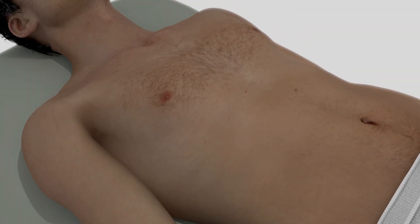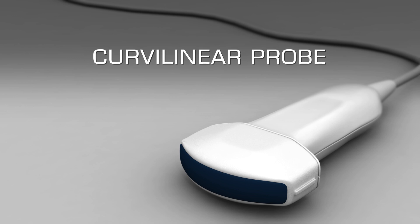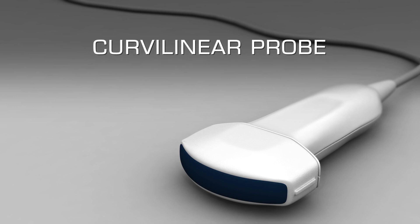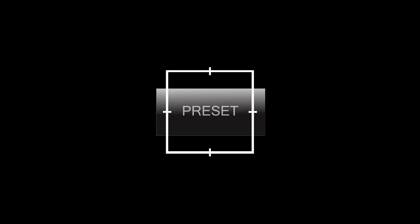As a starting point for the examination, views should be obtained with the patient lying in the supine position. The ideal transducer for assessing the abdomen is a curvilinear array probe with a frequency range of 2 to 5 MHz. Select the abdomen preset on the ultrasound device.